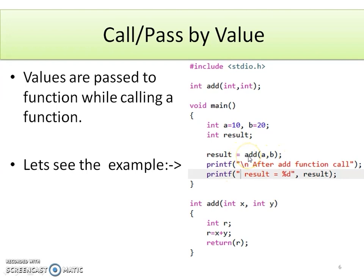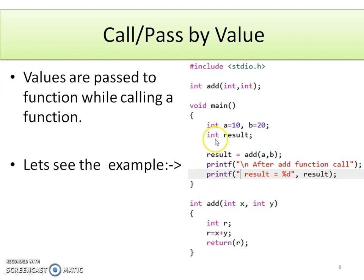Here control transfers from the calling function main to the called function add. The values of a and b are collected in variables x and y respectively. A new variable r is declared inside add. R holds the addition of x and y and we return the value of r back to the calling function main. So result will hold the addition of the two numbers, and it will display the result with the help of a printf statement.